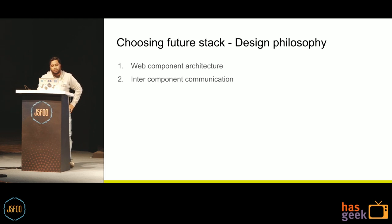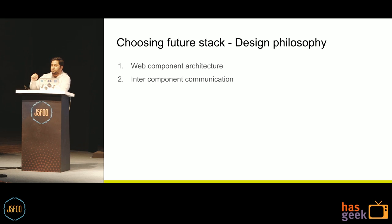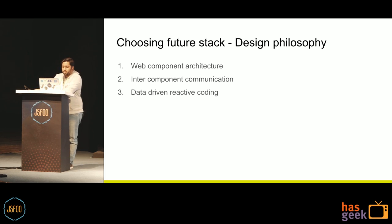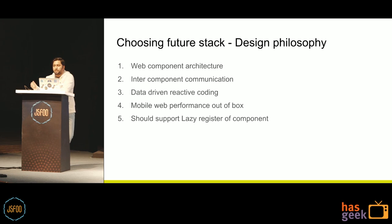Next came inter-component communication. From our web experience, we found that unidirectional data flow — parent-to-child props, child-to-parent events, and using a store for business data — is a very good scalable architecture. Next is data-driven reactive coding within the component, which we didn't want to lose. Also, mobile web performance should be out of the box — an individual developer should not have to worry about how to deliver a performant web application. We also wanted to leverage the lazy registration of components that was present in Polymer.